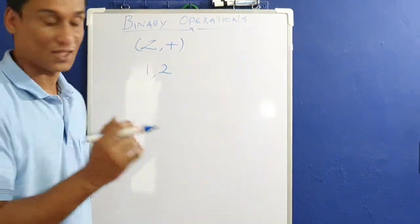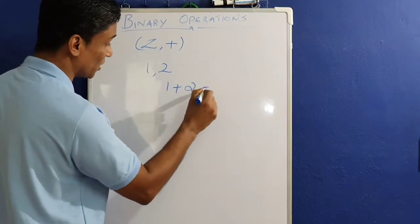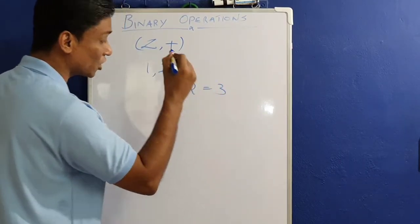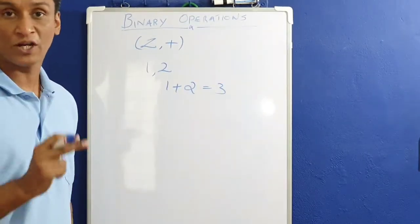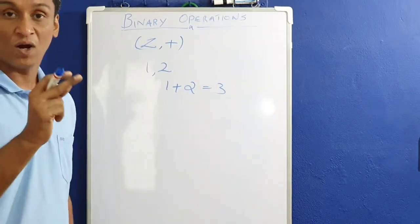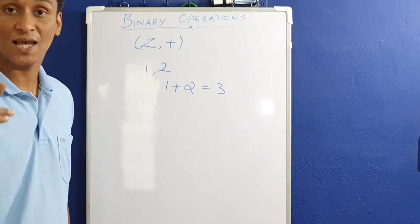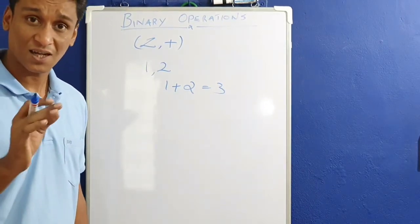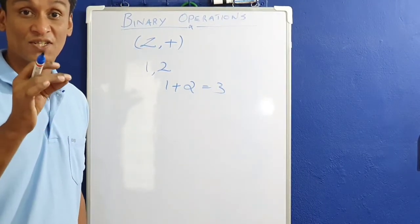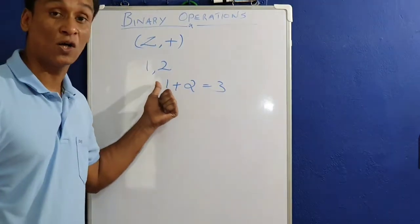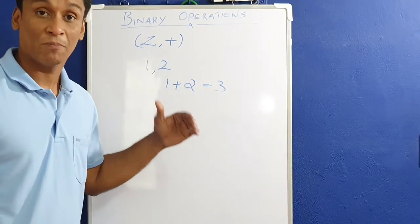For example, 1 plus 2 equals 3. We say that addition is a binary operation on the set of all integers. This also applies to multiplication.